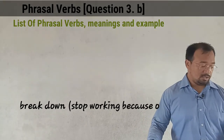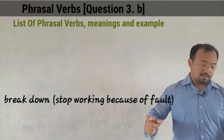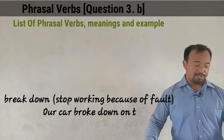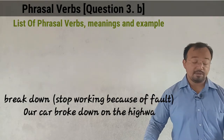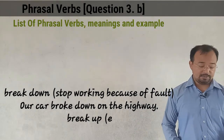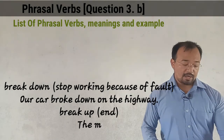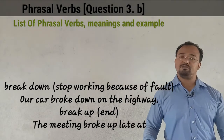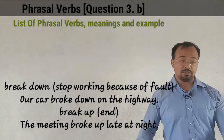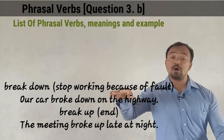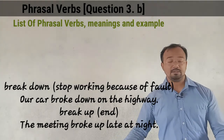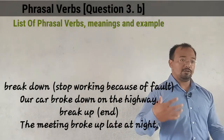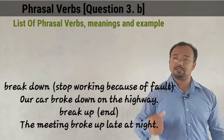The phrasal verb 'break down' means to stop working because of a fault. Example: 'Our car broke down on the highway.' Here 'break' becomes 'broke' in the past form. 'Broke down' means the car stopped working.